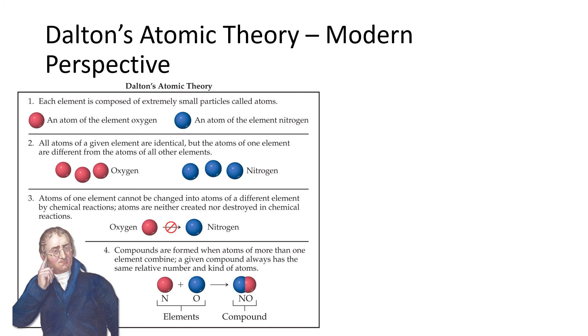Statement number two: all atoms of a given element are identical. Well, not quite. We now know about something called isotopes and we will learn about those more in chapter three. So there's a little bit of a problem here with statement number two because of the existence of isotopes.